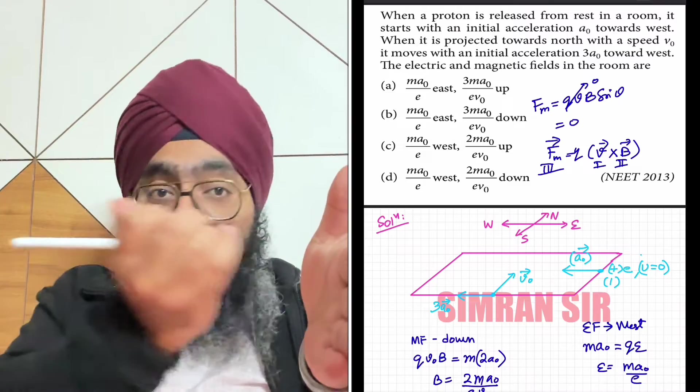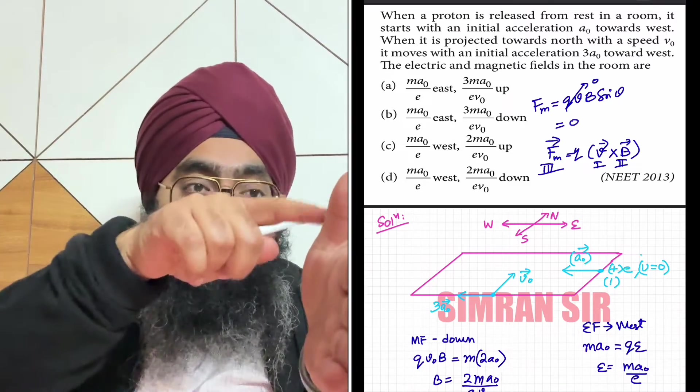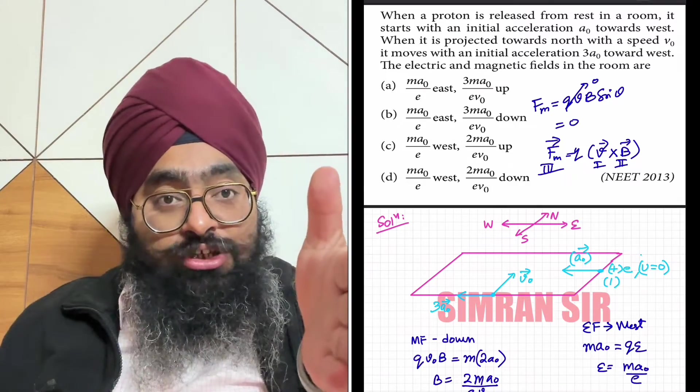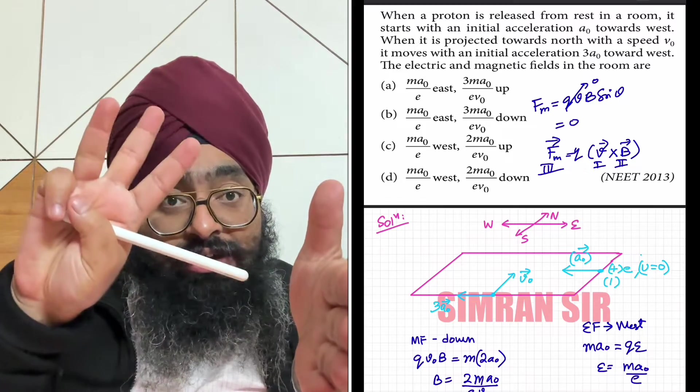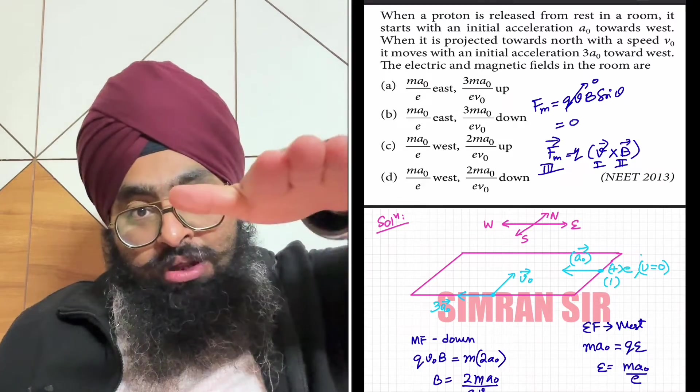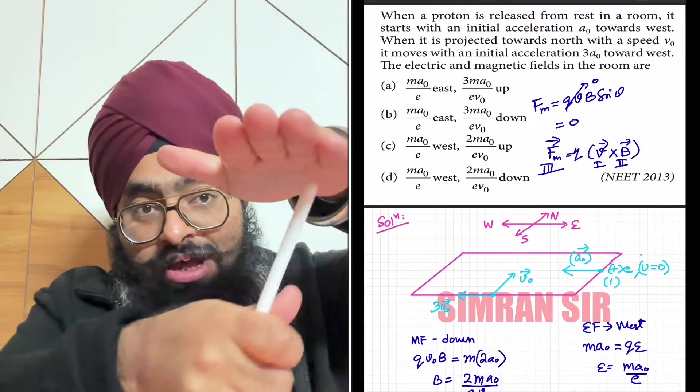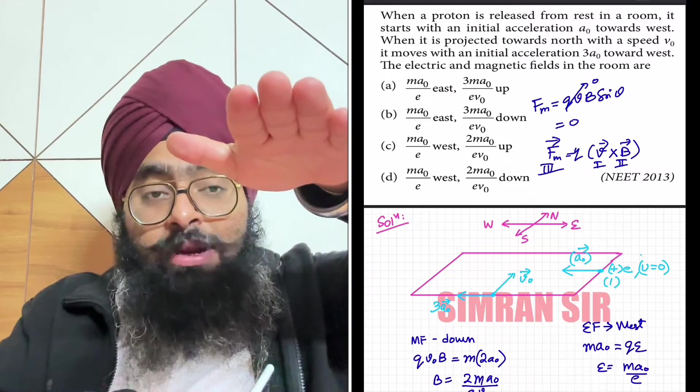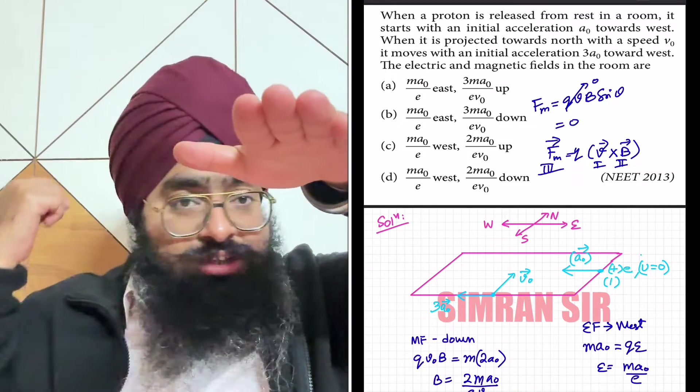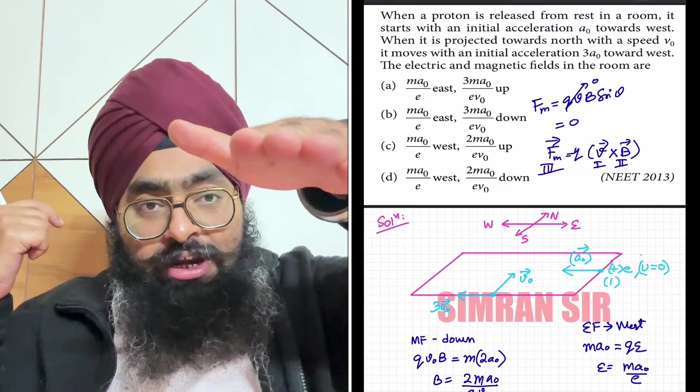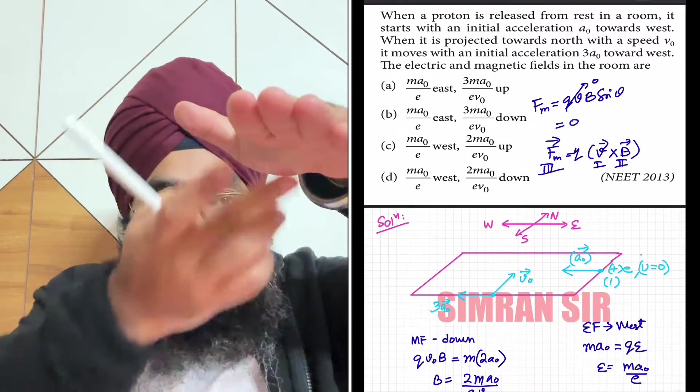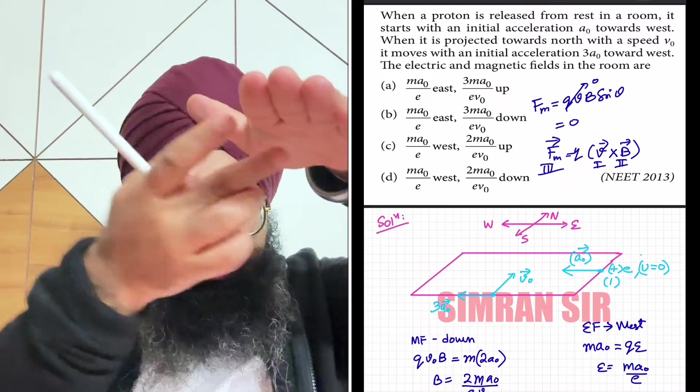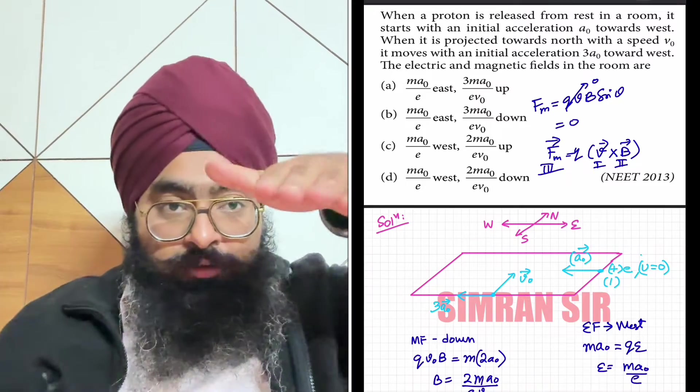Thumb towards west, fingers point in first vector direction, palm in second vector direction. v cross B: this is v in north direction, this is F towards west. So the magnetic field is in the downward direction.